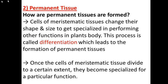Hello everyone, let's start our third session of Chapter 6: Tissues. Previously we learned about meristematic tissues, which is one of the main types of plant tissues. In this session we are going to learn the second main type, that is permanent tissues. Within permanent tissues there are two subtypes: simple permanent tissues and complex permanent tissues.